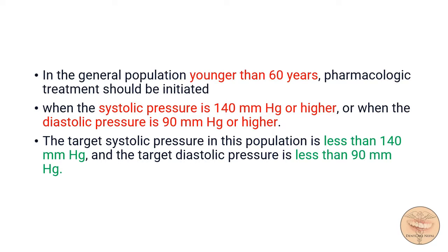For the general population of adults younger than 60 years, pharmacologic treatment should be initiated when the systolic pressure is 140 mmHg or higher, or when the diastolic pressure is 90 mmHg or higher. The target systolic blood pressure should be less than 140 mmHg and the target diastolic pressure should be less than 90 mmHg.